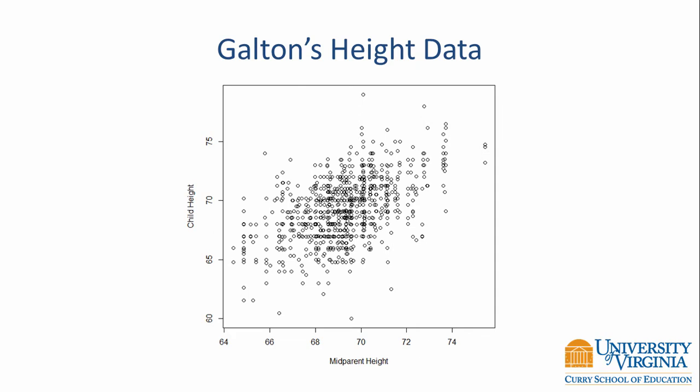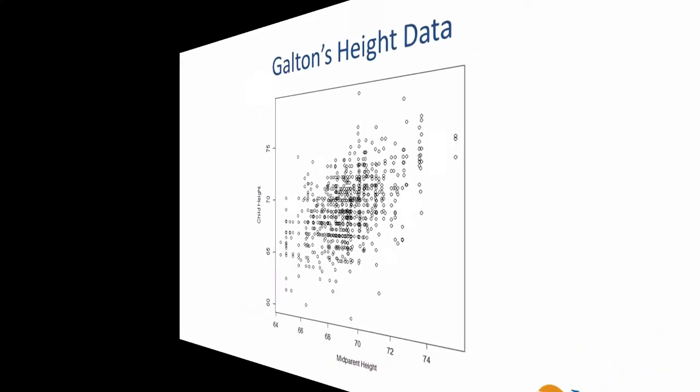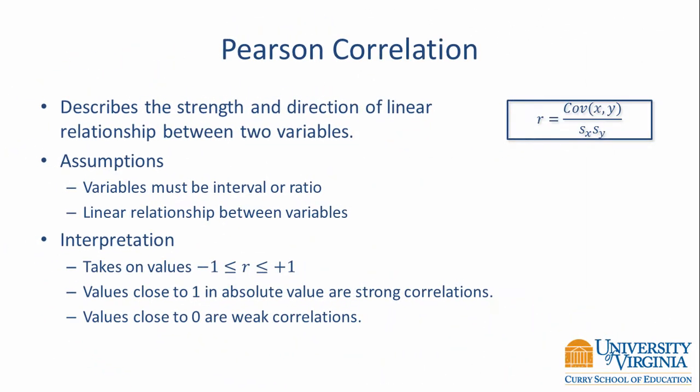The difficulty with trying to interpret the strength of the relationship from a scatter plot is that it's very subjective. One person may say it's a small correlation; another may say it's a moderate correlation. What we'd really like is a number that quantifies the strength and direction of the relationship, and so Pearson developed the equation for the correlation coefficient.